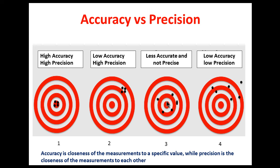In the third example, the readings are close to the true value but not exactly on target, so it is considered less accurate. And the readings are scattered from each other, so it is considered low precision. In the fourth example, there is low accuracy and low precision — measurements are neither close to the true value nor to each other.